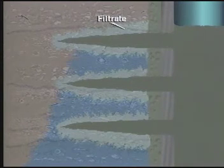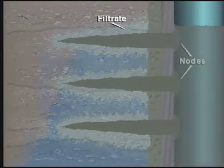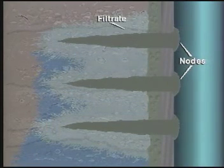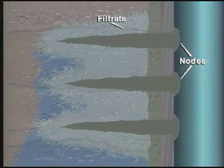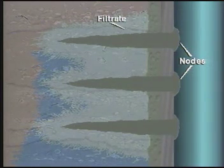This creates a buildup of cement filter cake. A properly designed slurry leaves only a small cement filter cake bump, called a node, inside the casing, after excess slurry is circulated out of the well.